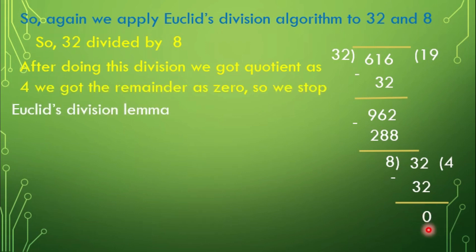So, we can stop. On applying Euclid's Division Lemma, we have, at the last stage, the divisor is 8. The HCF of 616 and 32 is 8. Therefore,